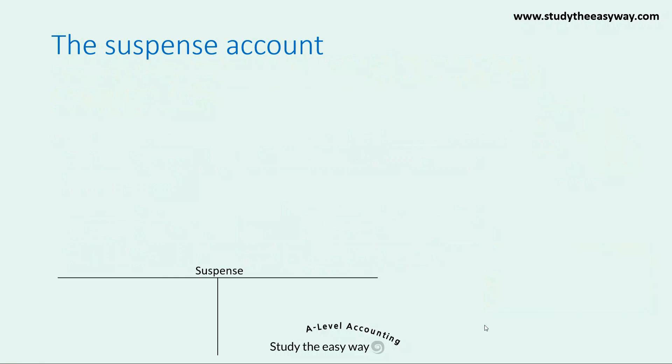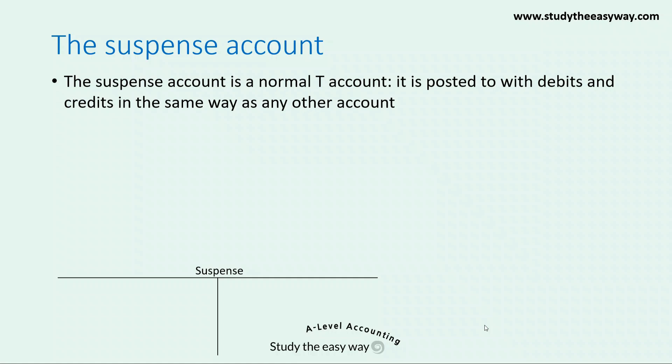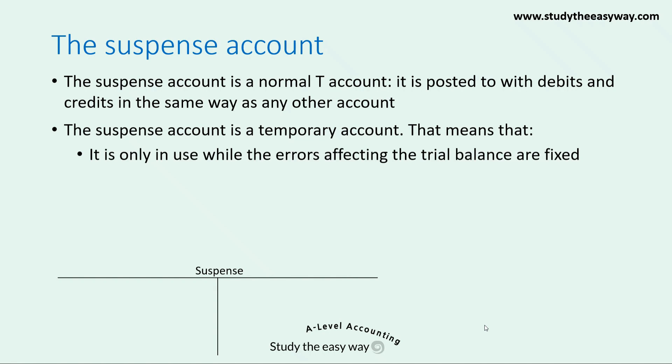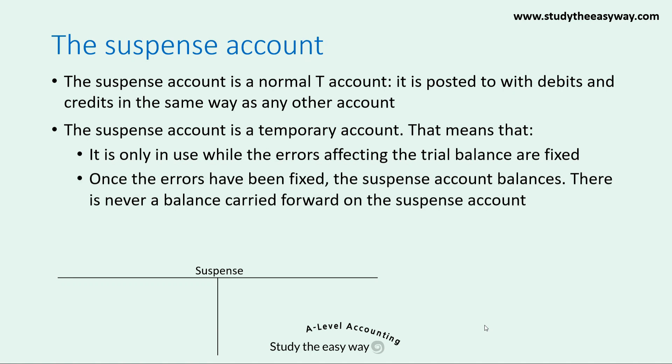The suspense account is a normal T account and is posted to with debits and credits in the same way as any other T account. The suspense account is referred to as being a temporary account, meaning that it is only in use while the errors affecting the trial balance are fixed. Once the errors have been fixed, the suspense account balances, so there is never a balance carried forward on the suspense account.